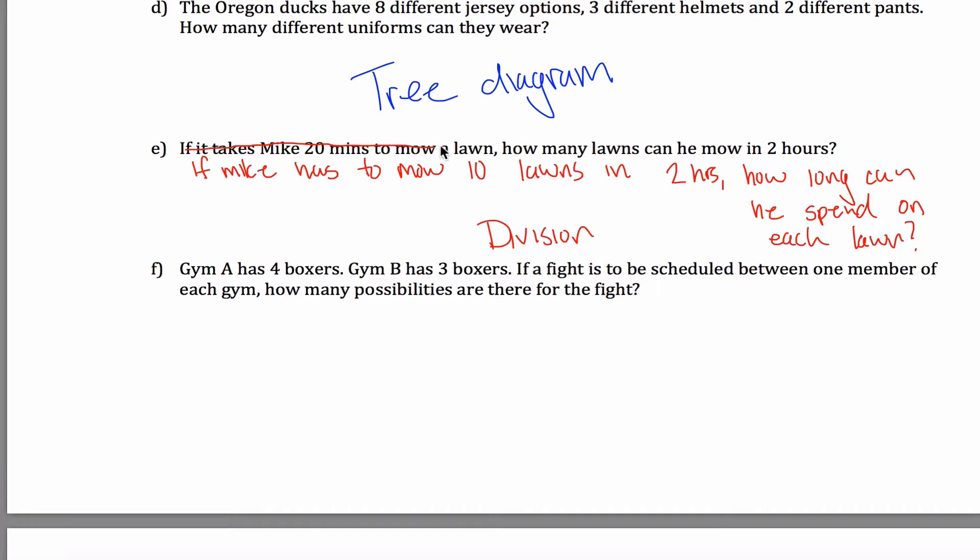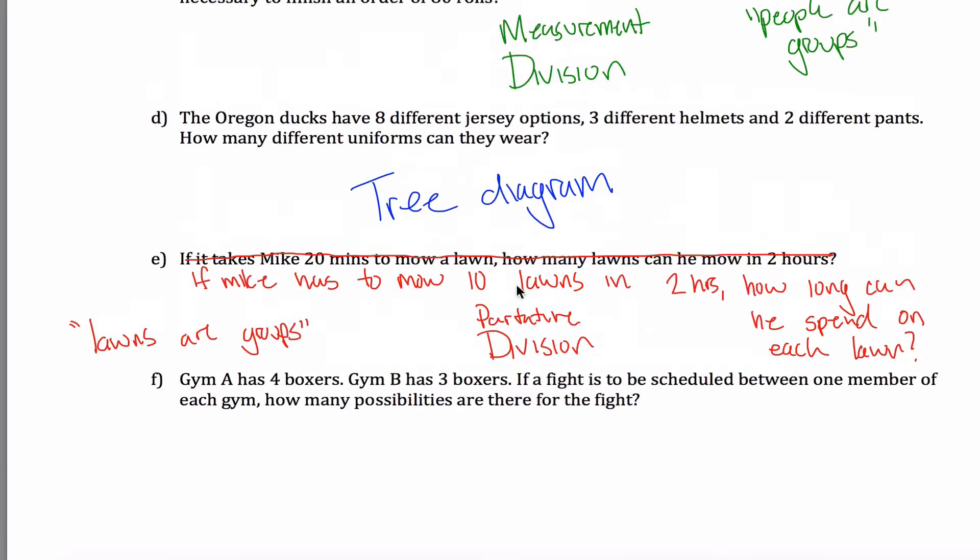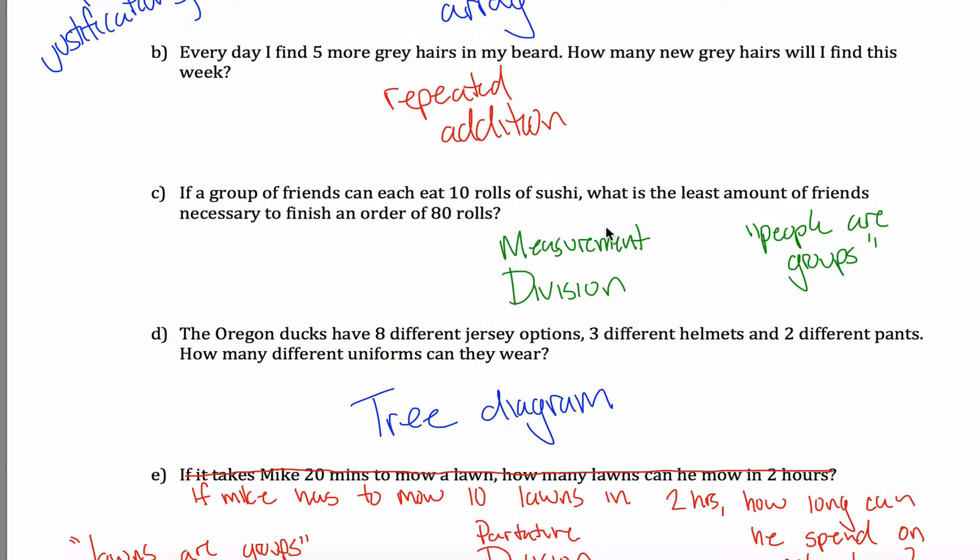And if I get rid of this problem and change it into this problem, now all of a sudden, it's the partitive method of division. The way you think about it is you have two hours worth of minutes. You've got 120 minutes, and you're going to partition them to the 10 lawns. So, the lawns are the groups. So this would be partitive division as opposed to the measurement division that we have up here.